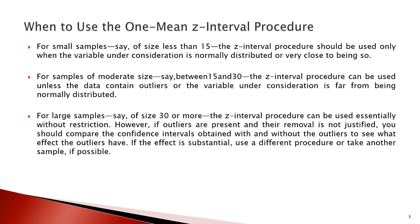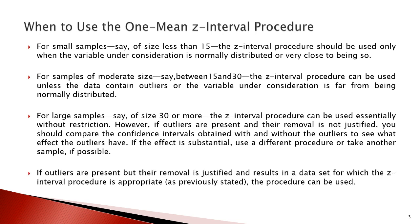For large samples of size 30 or more, the Z-interval procedure can be used essentially without restrictions. However, if outliers are present and their removal is not justified, you should compare the confidence interval obtained with and without the outliers to see what effect they have. If the effect is substantial, use a different procedure or take another sample. If outlier removal is justified and results in a data set for which the Z-interval procedure is appropriate, the procedure can be used.